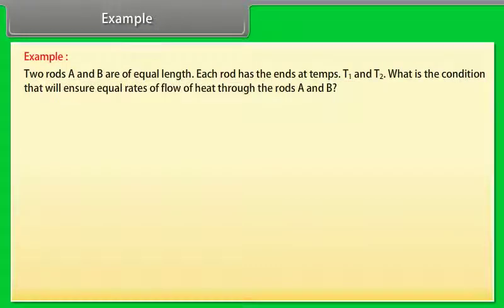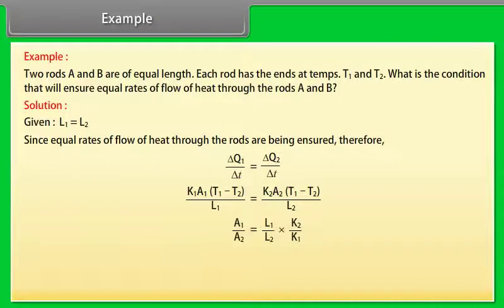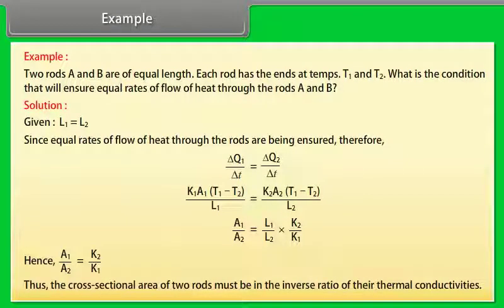Example on thermal conductivity: Two rods A and B are of equal length. Each rod has ends at temperatures T1 and T2. What is the condition that will ensure equal rates of flow of heat through rods A and B? Solution: Given L1 = L2. Since equal rates of flow of heat through the rods are required, ΔQ1/Δt = ΔQ2/Δt. Solving the expression gives A1/A2 = (L1/L2) × (K2/K1). Hence A1/A2 = K2/K1. Thus the cross-sectional areas of the two rods must be in the inverse ratio of their thermal conductivities.